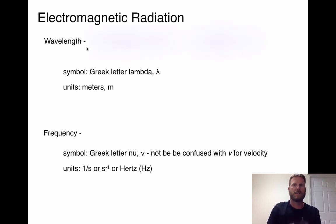Wavelength is simply the distance between two similar points on a wave. Most often wavelength is measured crest to crest or trough to trough. The symbol used to represent wavelength is Greek letter lambda, and generally wavelength is measured in meters.